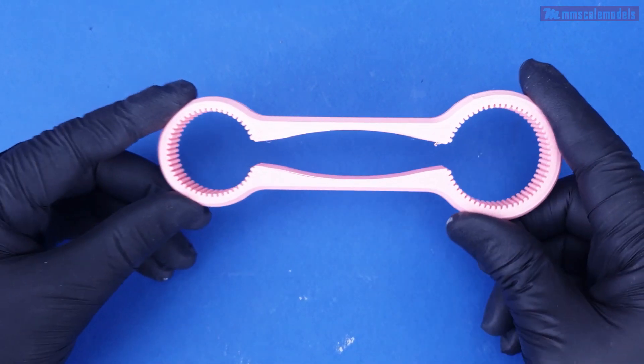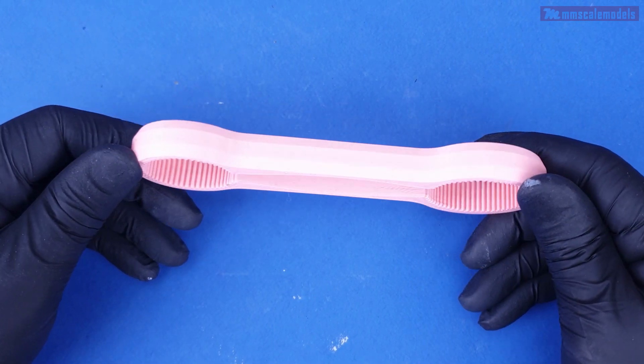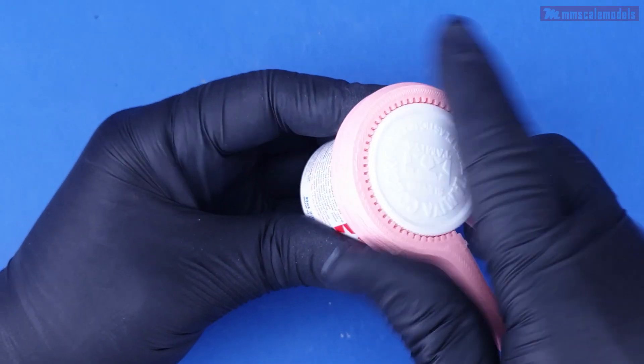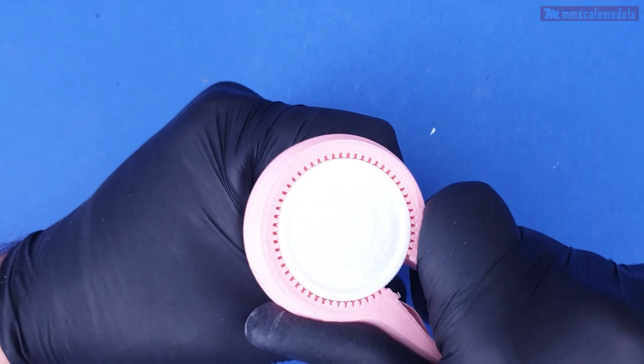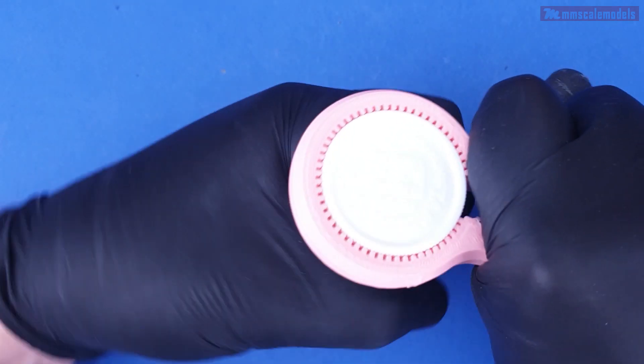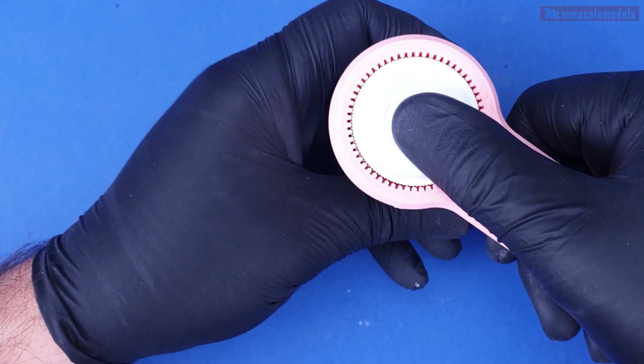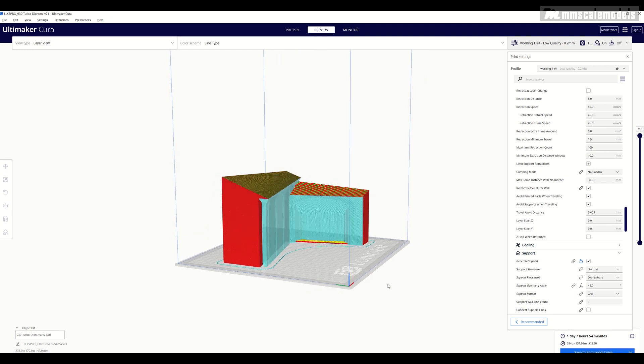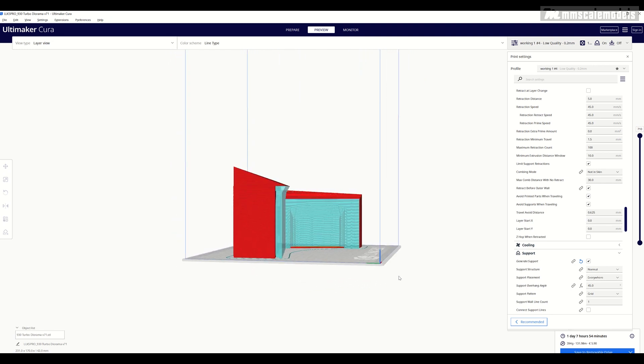To test something a little bit bigger and meaningful for the hobby, I downloaded this paint jar opener from Thingiverse and printed it. In hindsight I should have printed it solid but more on that a little bit later. The fact of the matter is it works. It was time to start printing the diorama pieces.